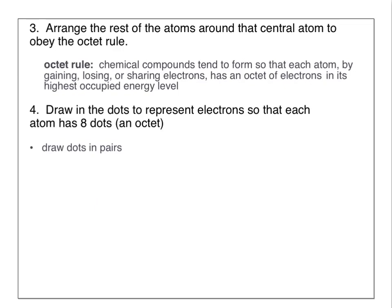Once you've found your central atom, arrange the rest of the atoms around it to obey the octet rule. The octet rule is another reason why atoms form chemical bonds. Atoms will gain, lose, or share valence electrons to have an octet—8 electrons—in their highest occupied energy level. The other reason atoms form chemical bonds is to lower their potential energy.